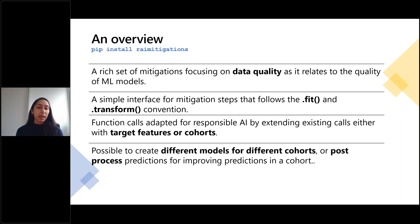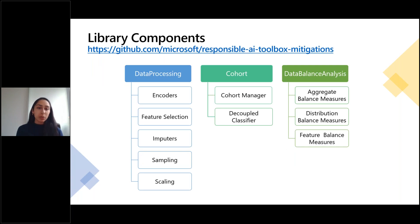All function calls can be extended to target specific cohorts — you can create different pipelines for specific cohorts to target errors occurring in each one, and you can also train different models for different cohorts if that seems helpful. The library's first component is data processing, with mitigation techniques for changing aspects of the dataset: encoders for categorical data, imputers for missing data, feature categorization, and feature selection tools.